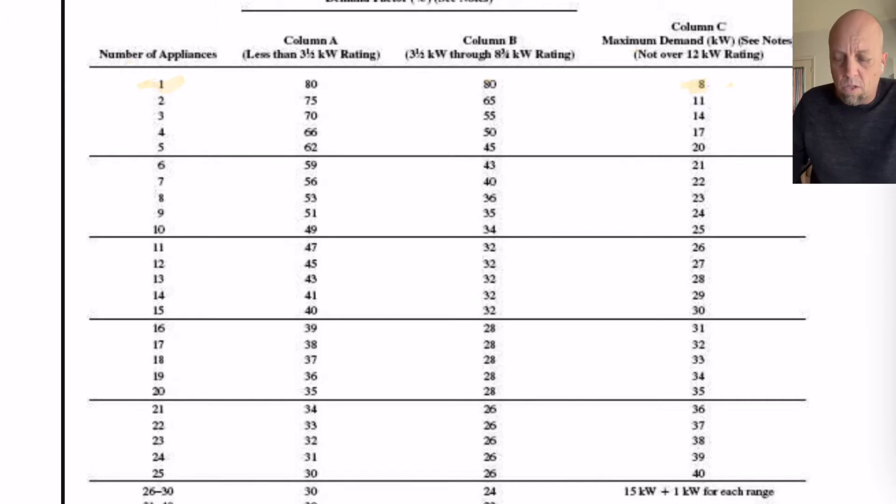So, column C is not a multiplier. It is a true number that is going to stay with you. You don't have to rework it. You don't have to do anything to it. Just use that.